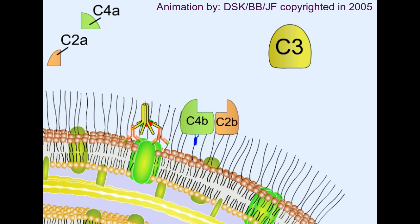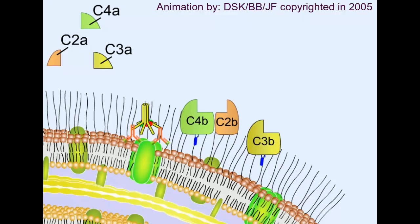Now C3 will come in and C4b-C2b complex will cleave C3. It has the same type of structure like C4b. Once C3 is cleaved, C3a is diffused. C3b, again with the thioester link can be present, it can be hydrolyzed by water, but normally as C3b is in very close proximity with the cell membrane, some of the cell membrane surface protein can cleave this thioester linkage with nucleophilic attack and it can form a covalent linkage between C3b.